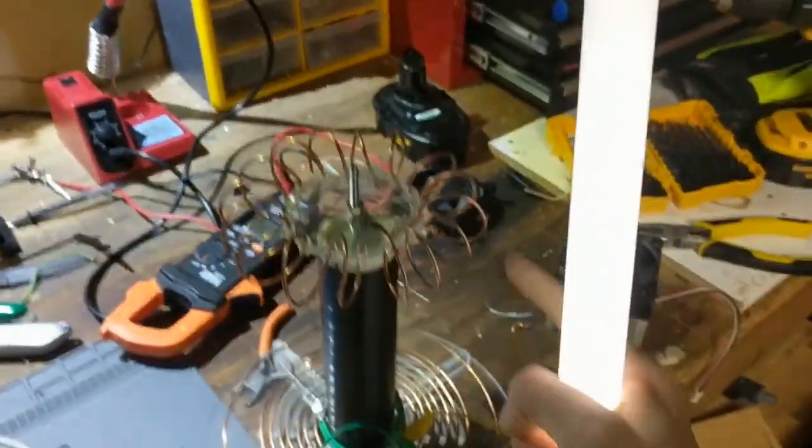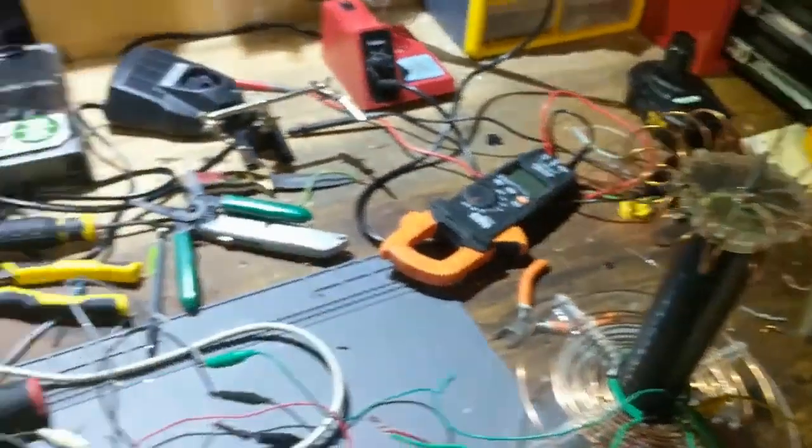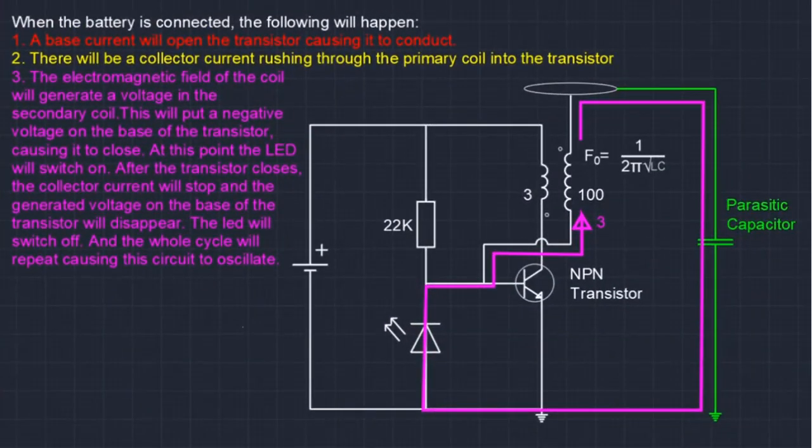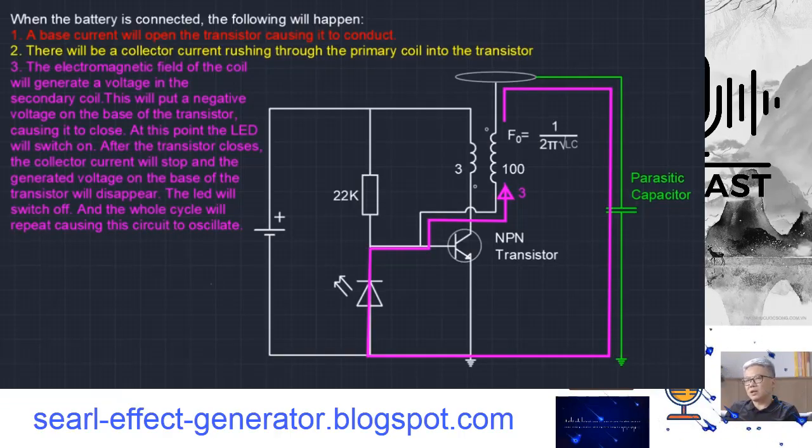When dealing with high voltages and currents, safety is paramount. Before we dive into the intricacies of the Russian Slayer Exciter, let's first grasp the fundamentals of this circuit and its connection to the Tesla coil and the concept of free energy. The solid-state Tesla coil and free energy are closely related to the Slayer Exciter circuit.